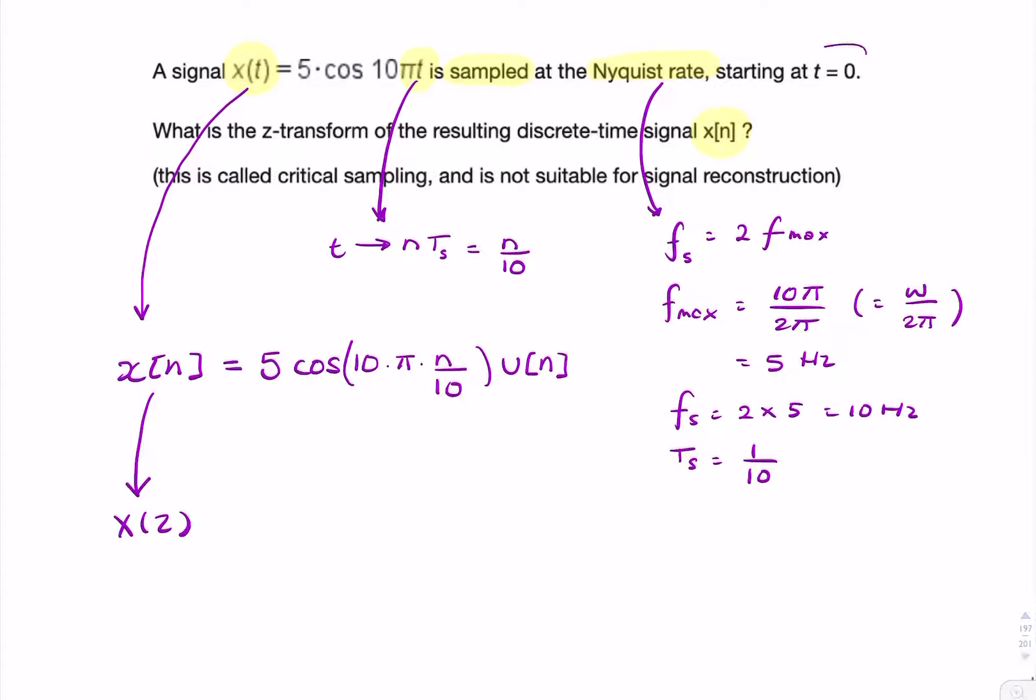The reason I do that is because it's a causal signal. It starts at t equals 0. So that unit step makes sure that happens. So 10 cancels with 10, and I end up with 5 cos(nπ)u[n].